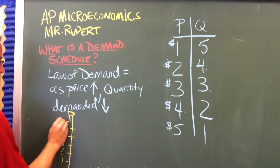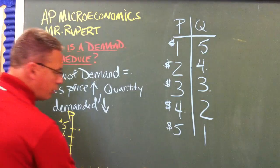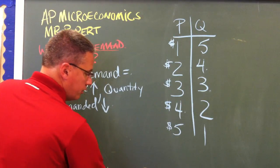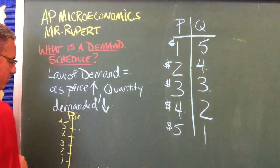As the price is $5, I would want one cup of coffee. Quantity is always on the horizontal axis. Price is always on the vertical axis.